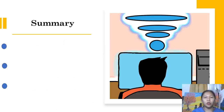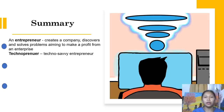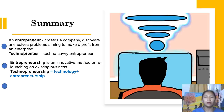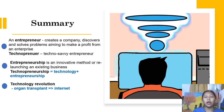To summarize the lecture for Week 1: we have the entrepreneur and technopreneur, where the entrepreneur creates a company, discovers and solves problems, and aims to make a profit, while the technopreneur is a technology-savvy entrepreneur. Entrepreneurship is an innovative method of relaunching an existing business, and technopreneurship equals technology plus entrepreneurship. The technological revolution began with the organ transplant in 1954 and extends through to the development of the internet.